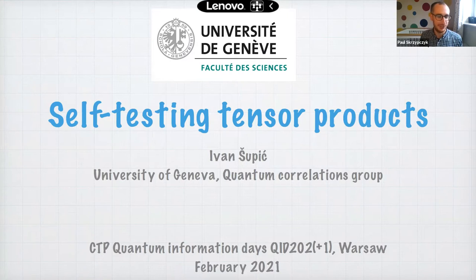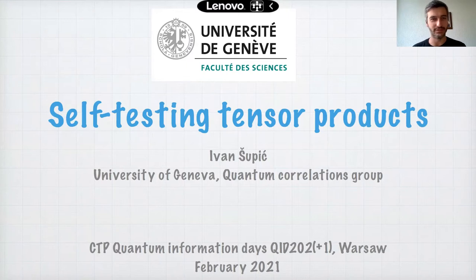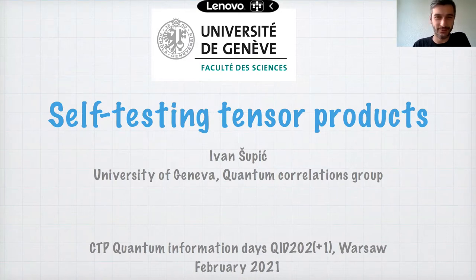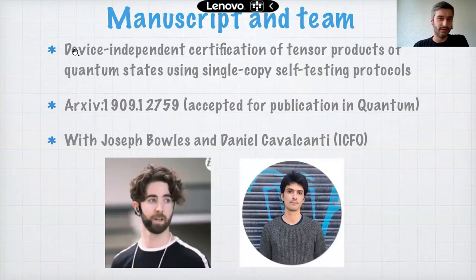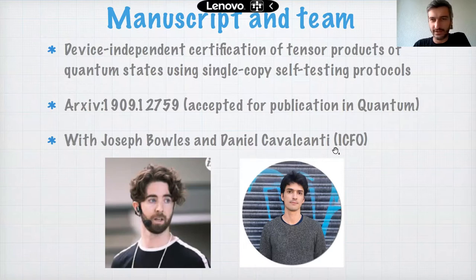Our next speaker is Ivan Shubic from the University of Geneva, and today he's going to tell us about self-testing tensor products. The manuscript is called 'Device Independent Certification of Tensor Products of Quantum States Using Single Copy Self-Testing Protocols,' done in collaboration with Tavakoli and Dani Cavalcanti from ICFO. Here you have the arXiv code; it is accepted for publication in Quantum.